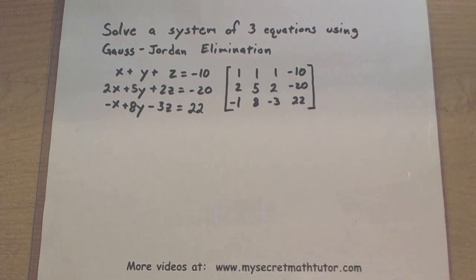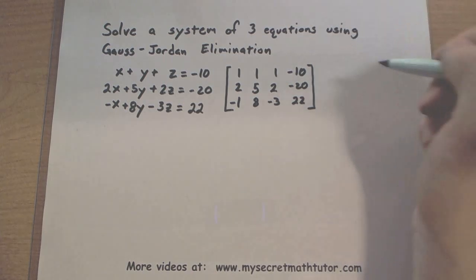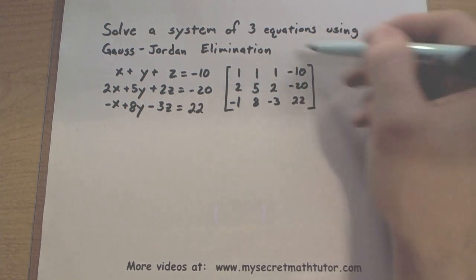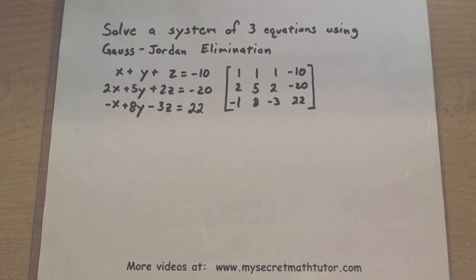Now there are three things we are allowed to do. We can swap rows, we can multiply a row by a constant, or I can add a multiple of one row to another. So let's see what steps will be needed in order to transform this into reduced echelon form.